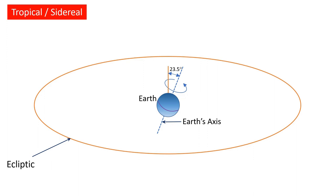The equator is another imaginary line running across the largest circumference of the Earth in the east-west direction, equidistant from its poles, dividing the sphere into two equal halves called the northern hemisphere and the southern hemisphere. So far so good. There is also another concept in astronomy and astrology called the celestial sphere, which is used to model the sky. Let's see what it is.